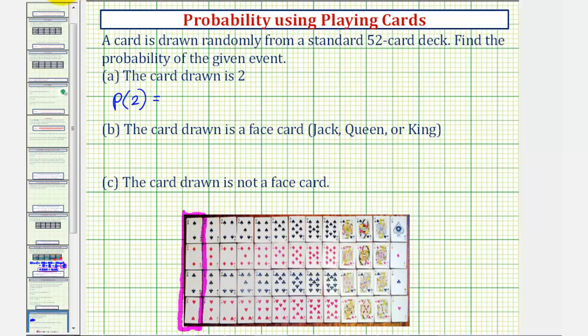So the probability of selecting a 2 would be 4/52, or 4 divided by 52, which does simplify. There's a common factor of 4 here. So the exact probability of the fraction would be 1/13.